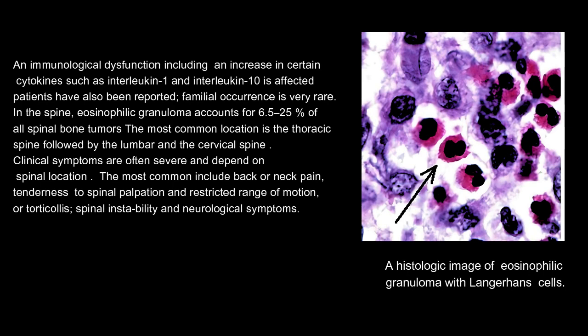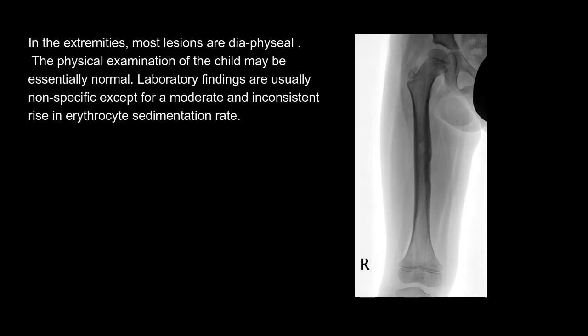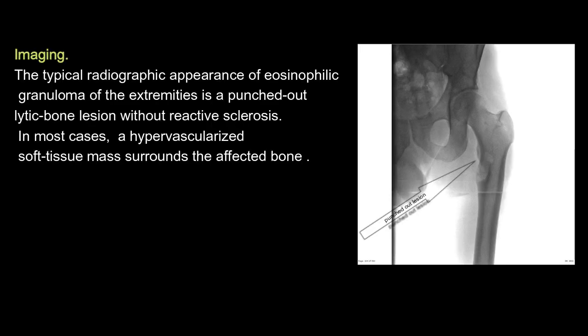Clinical symptoms are often severe and depend on spinal location. The most common include back or neck pain, tenderness to spinal palpation, restricted range of motion or torticollis, spinal instability, and neurological symptoms. In the extremities, most lesions are diaphyseal. The physical examination of the child may be essentially normal. Laboratory findings are usually nonspecific, except for a moderate and inconsistent rise in erythrocyte sedimentation rate.